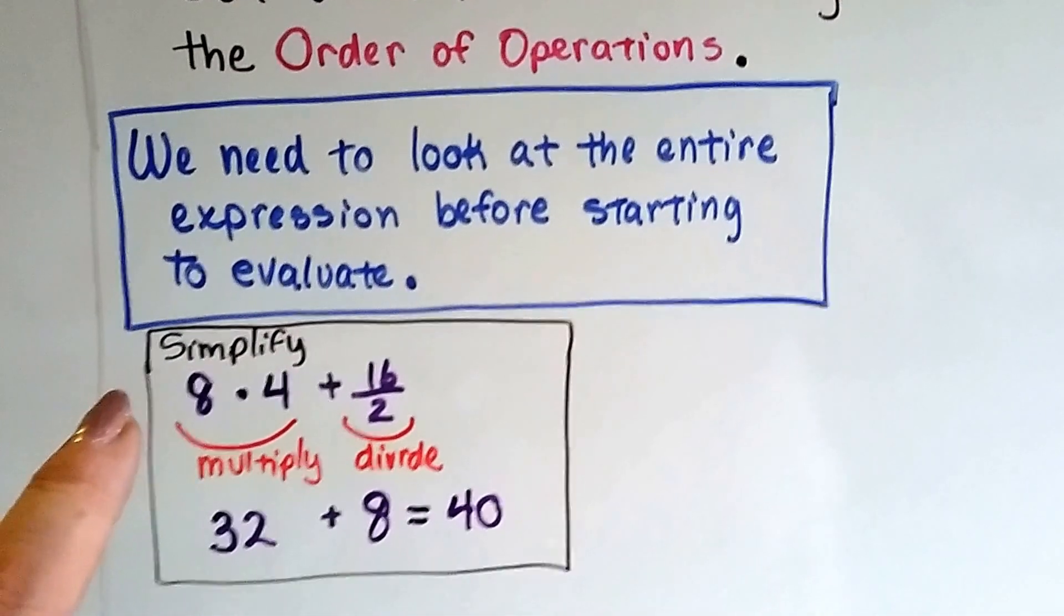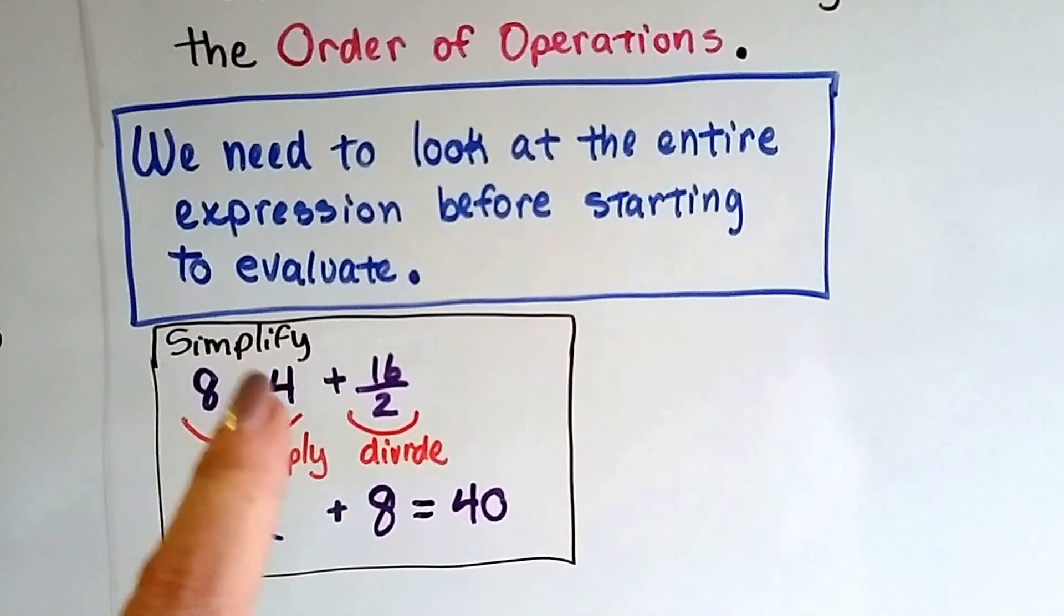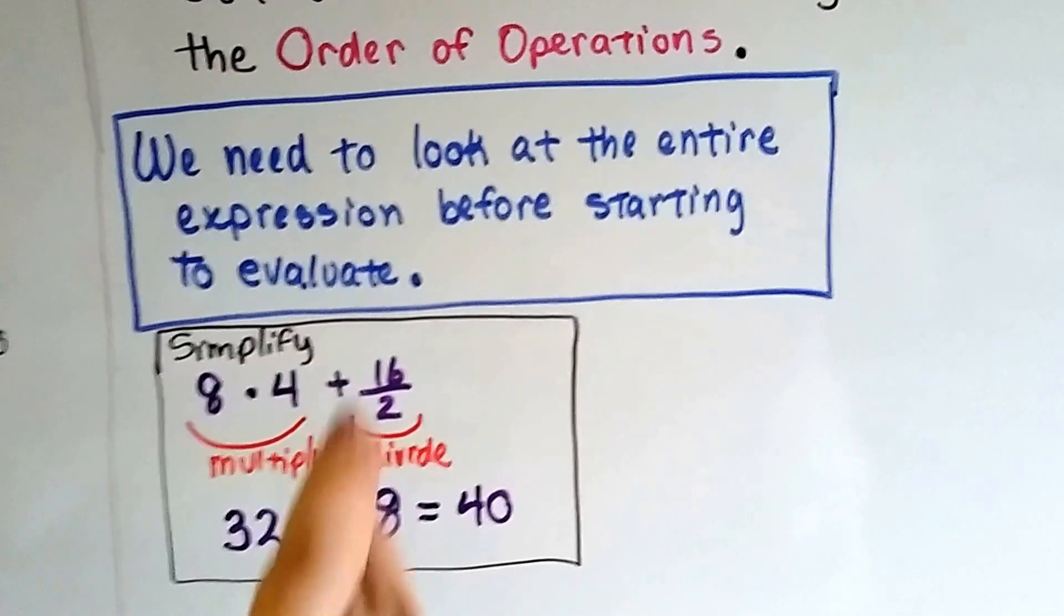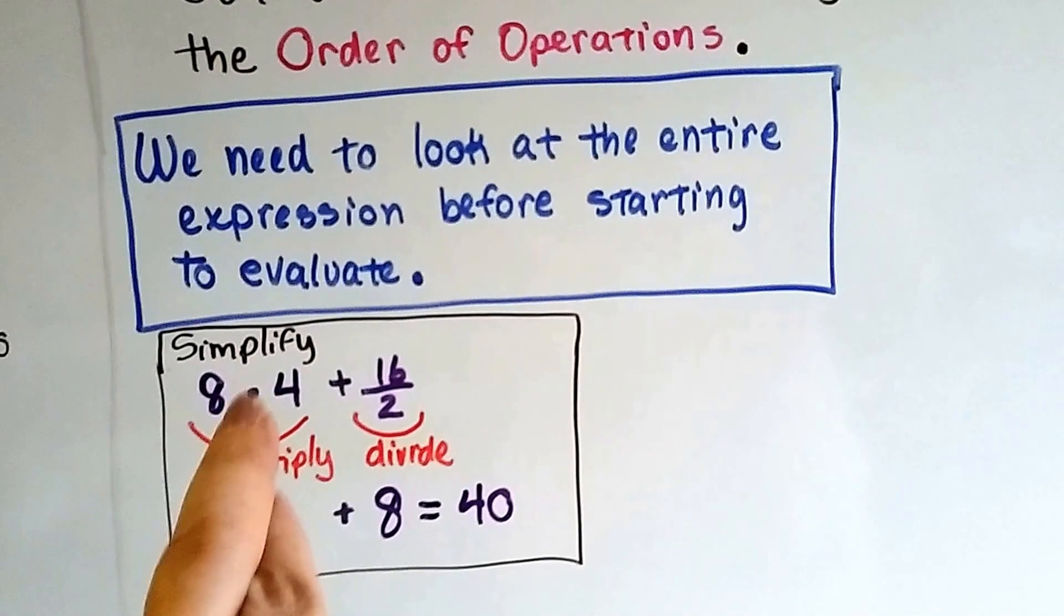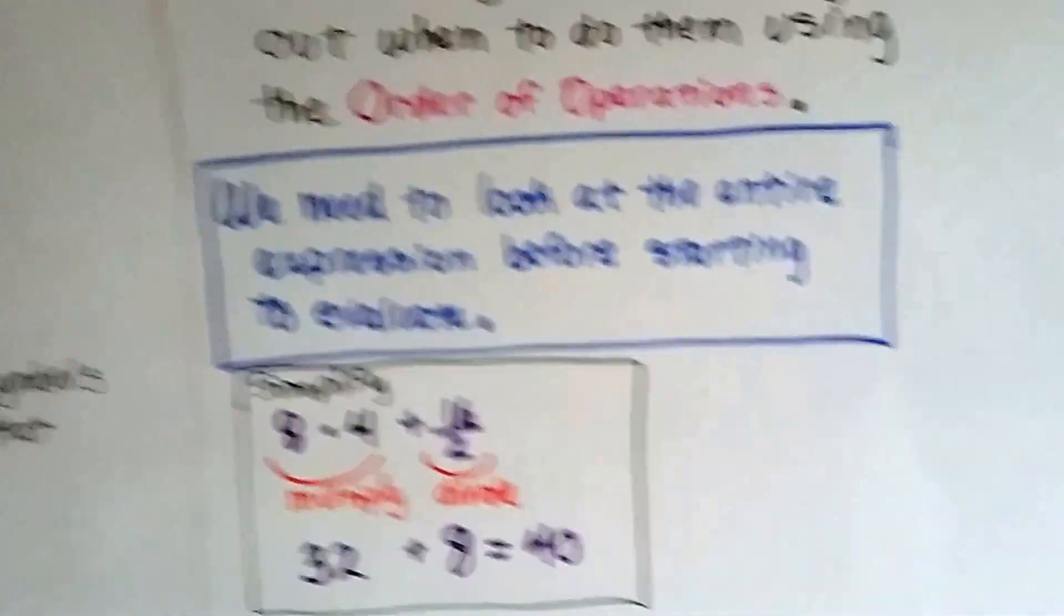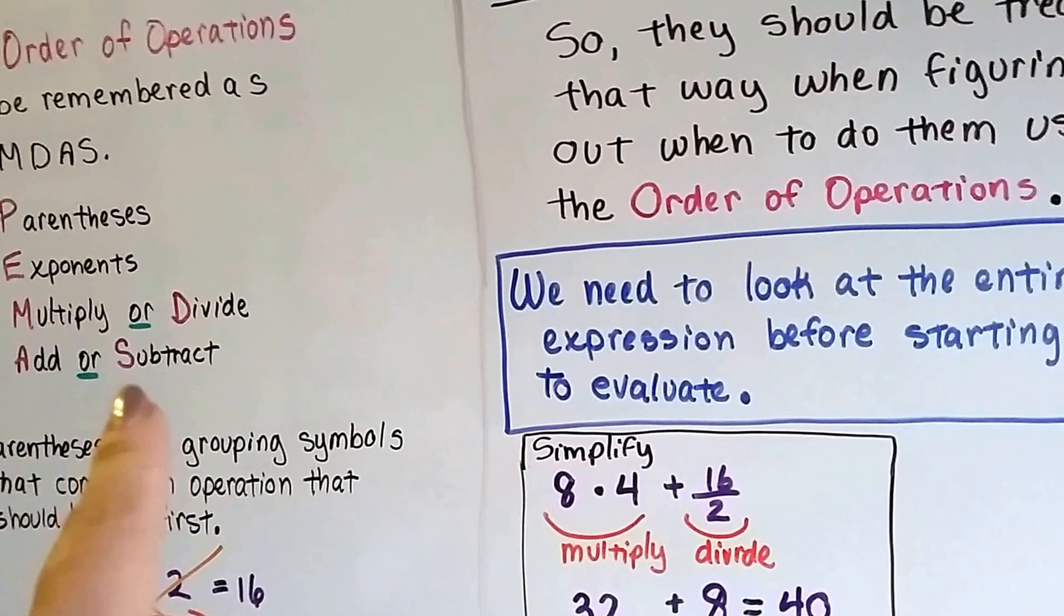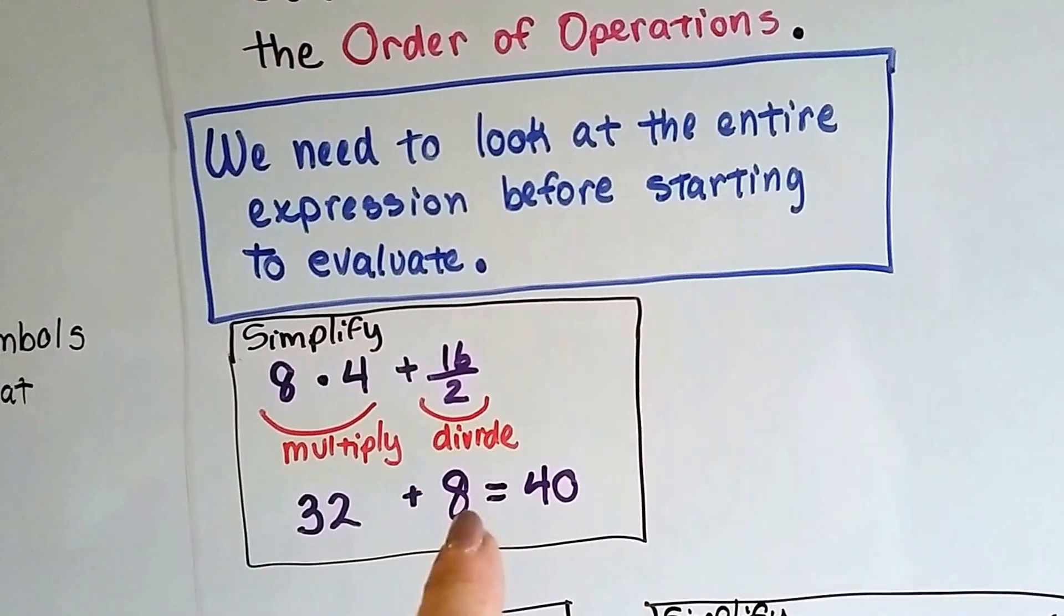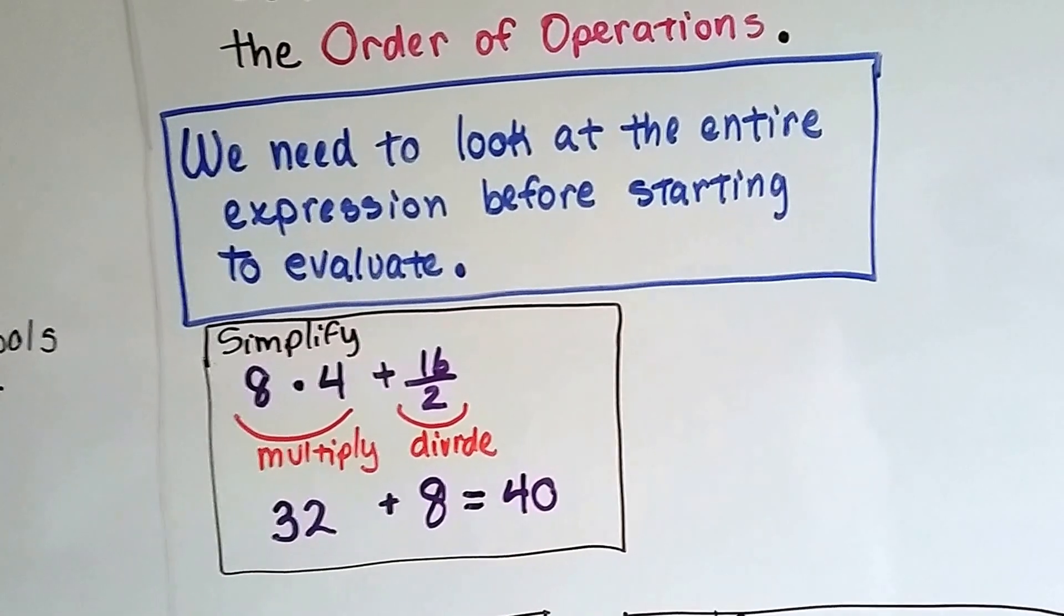If we need to simplify something, we've got multiplication here and division here. See how they're split by the plus sign? So we can do this multiplication and then do this division and then add them together last, because multiply or divide is before adding. So 8 times 4 is 32 and 16 divided by 2 is 8. It gives us 40.